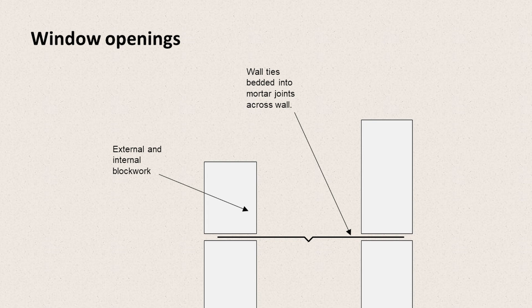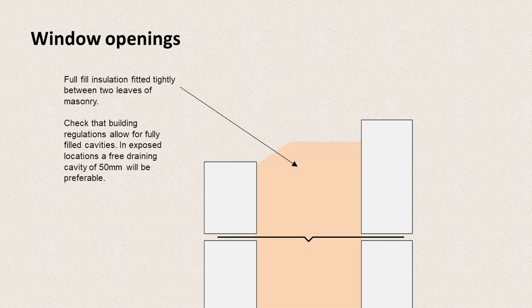So we start with our two leaves of blockwork — we've got internal and external blockwork. We've got wall ties that are joining these two leaves together, and in order to form this detail we need to cut the external blockwork down, so we've got a slightly shorter wall on the outside than we do on the inside. And between these two leaves we have a full fill cavity, with insulation that's tightly packed between the inside and outside leaves.